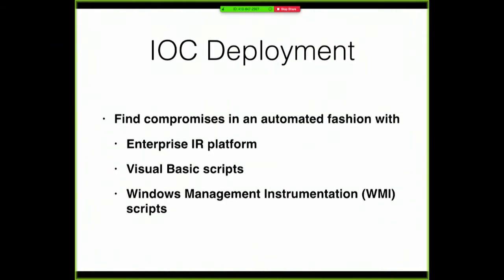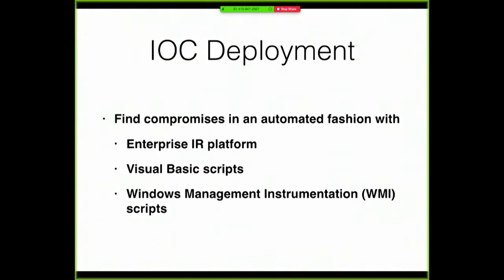You find IOCs in some automated fashion using scripts. In a Windows environment, WMI is typically what you use. Windows Management Instrumentation lets you send a query over a Windows network and get information about the operating system from the other end. You can do WMI queries to get information from a machine. You could put it in any language, like Visual Basic or Python, but you wouldn't use Python in a Windows environment because it's not native and won't work well. Stick with native Windows tools — Visual Basic, WMI, or these days probably PowerShell.